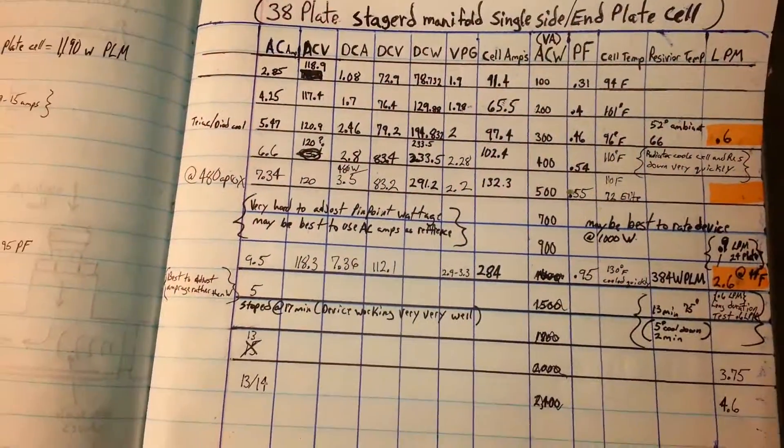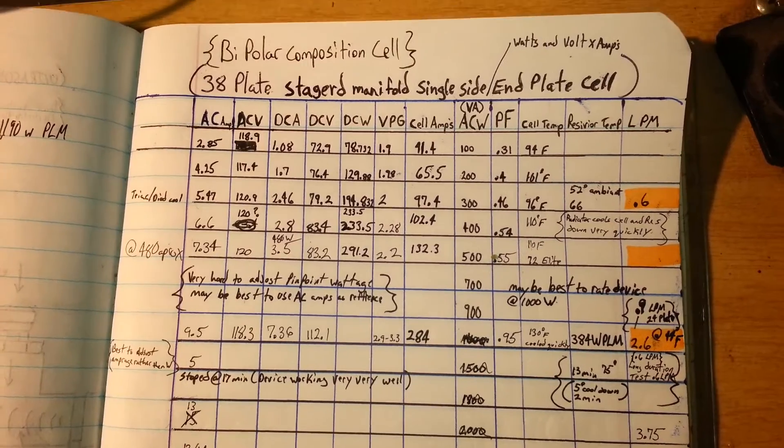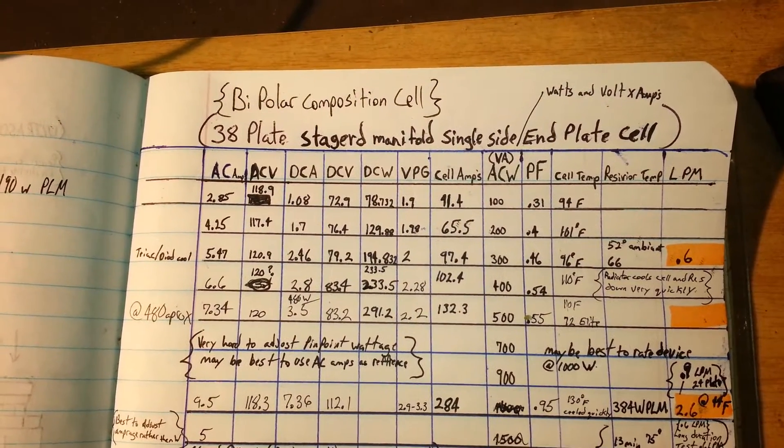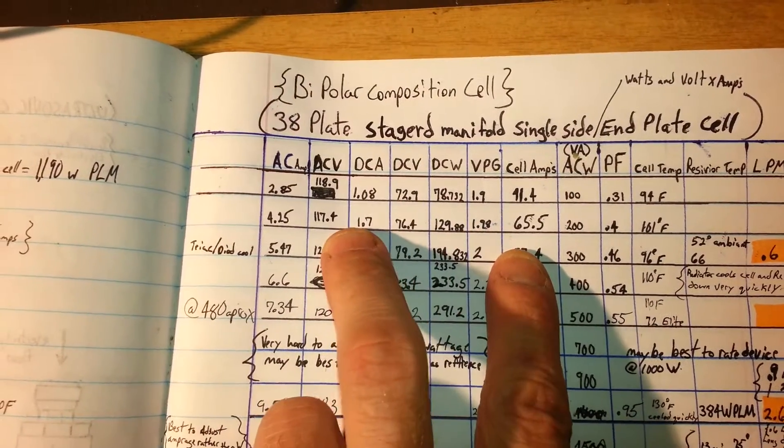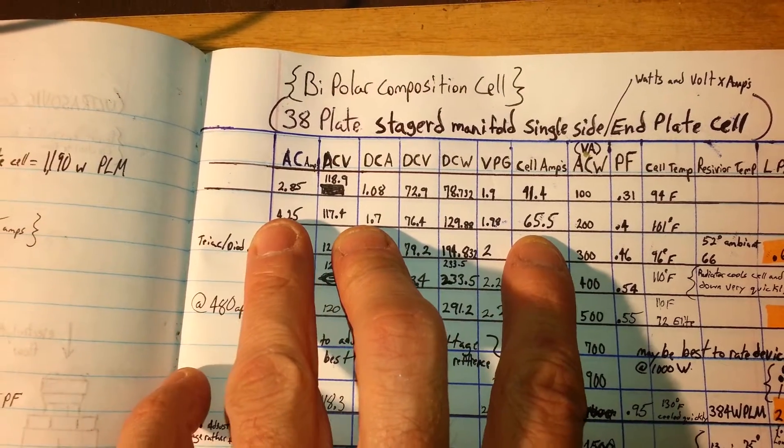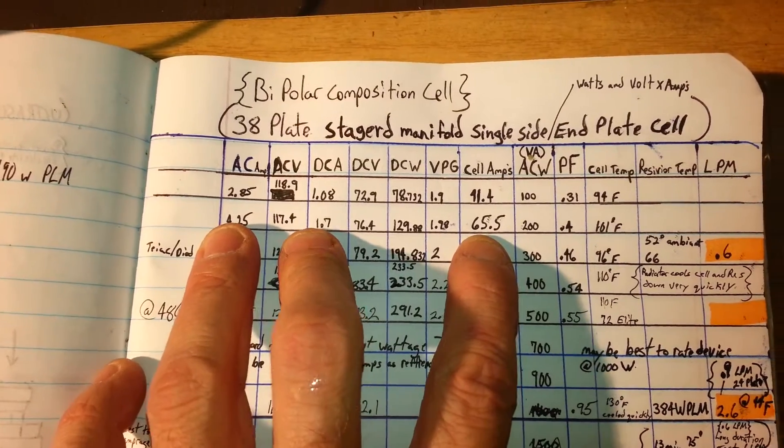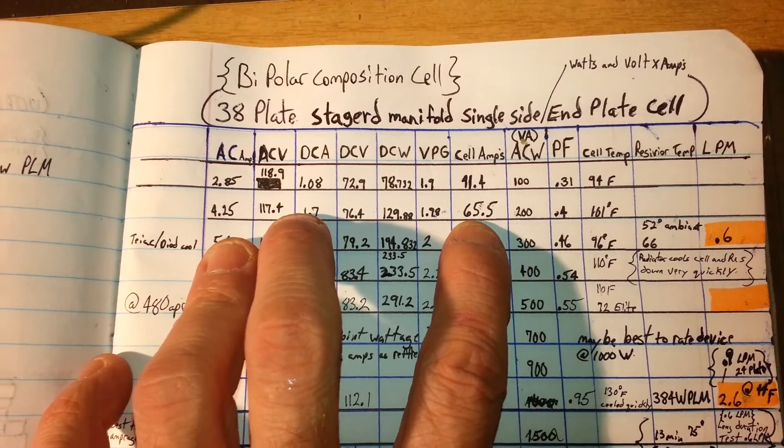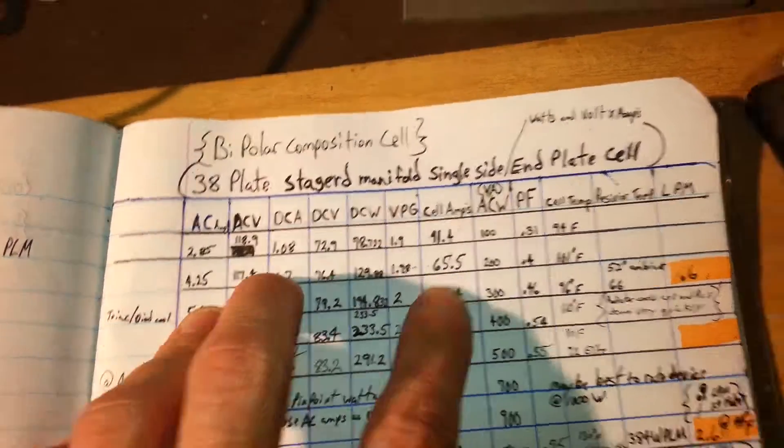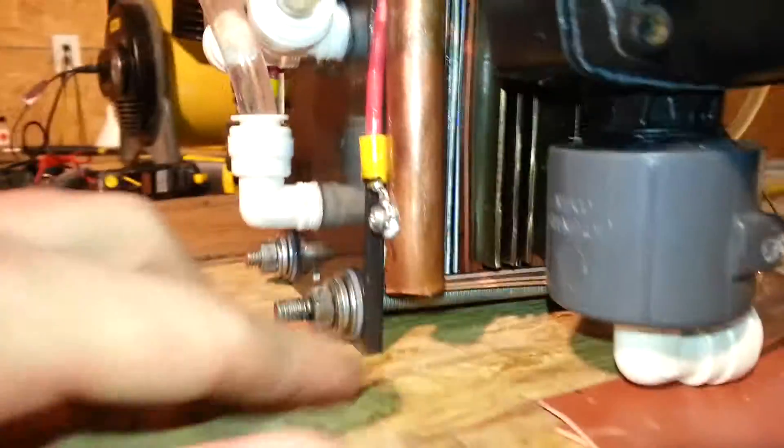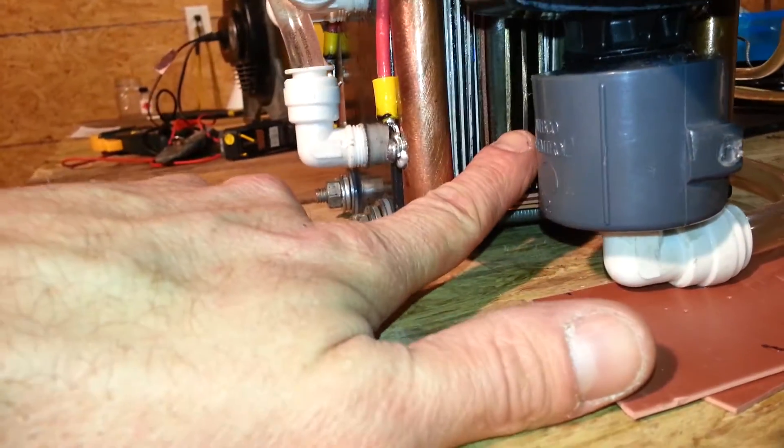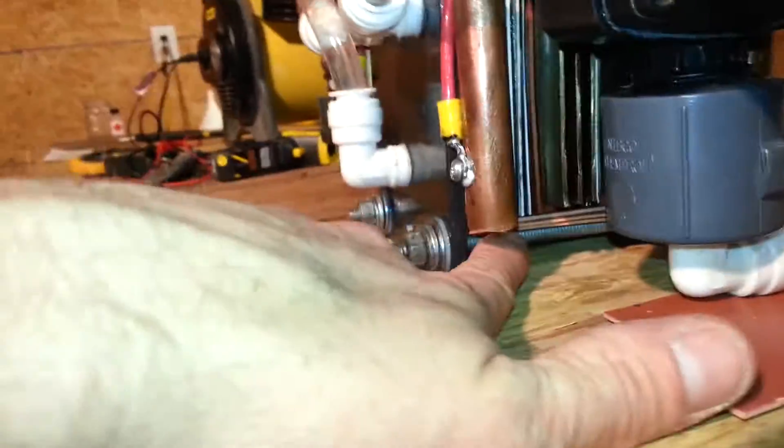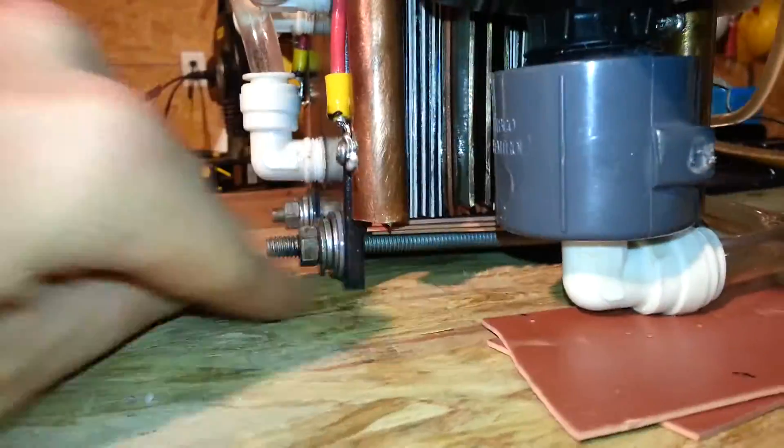And before I fire this up I want to show you some of the specs that I got during the testing. When you see this here where it says cell amps, the reason why the cell amps are different from these other two amperage readings is because electrolysis cells and bipolar systems act like batteries in reverse. When you connect batteries in series the voltage is increased, but when you connect electrolysis cells in series the amperage is increased and the voltage is decreased.